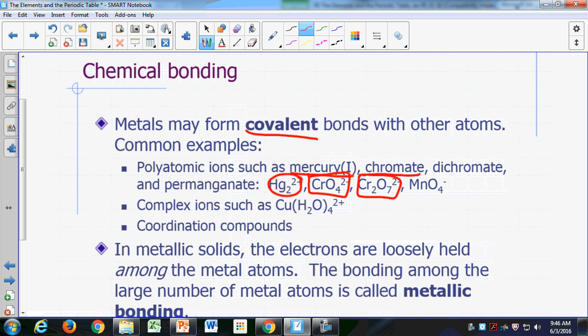Same thing, dichromate ion, Cr2O7 with a negative two charge, permanganate ion, manganese is a metal, oxygen is a non-metal, you have a covalent bond between them.